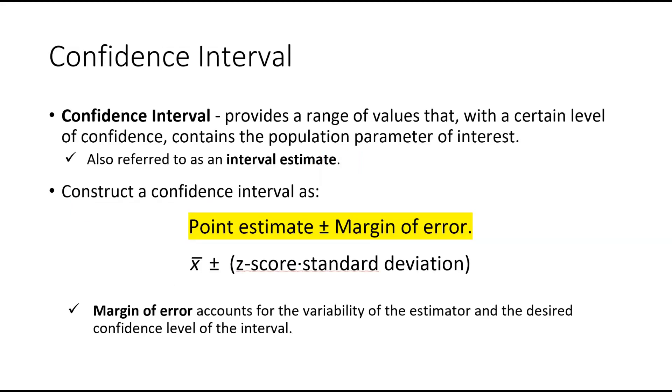So what is a confidence interval? An interval is a range. A confidence interval provides a range of values that with a certain level of confidence, 90%, 95%, contains the population parameter of interest, the mean or the proportion. Sometimes they call it an interval estimate. To construct a confidence interval, it's the point estimate plus or minus the margin of error. In this case, our point estimate is X-bar, plus or minus the Z-score times the standard deviation. And this is the variability of the estimate.